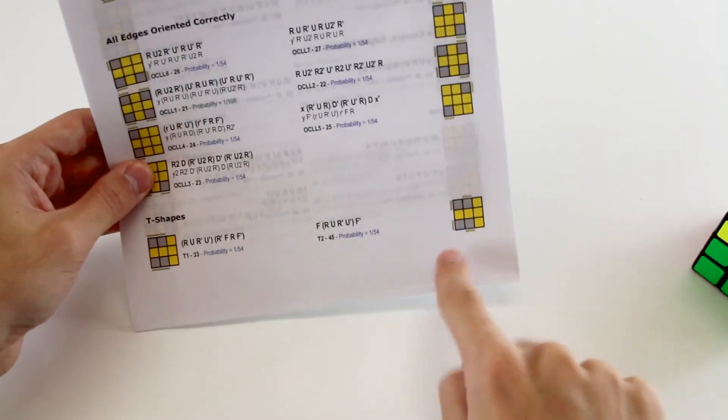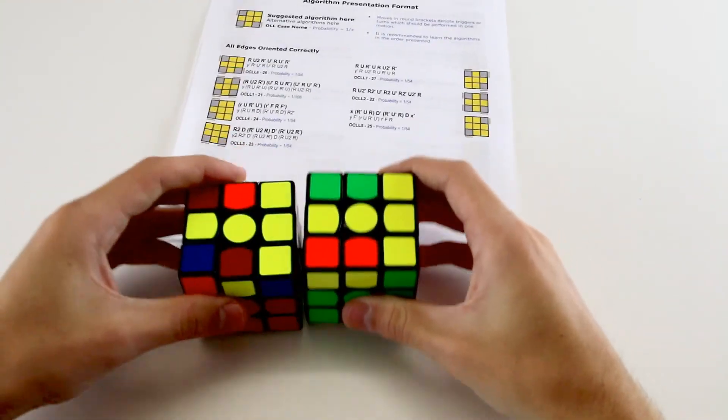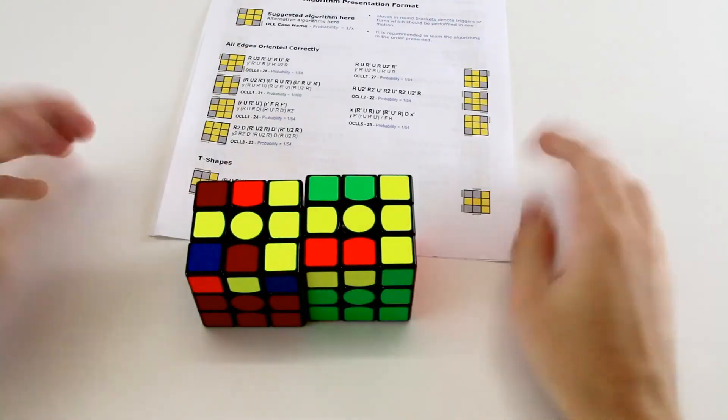The second group here are the T shapes, which are the two cases where you have a T on your top layer, and so on and so forth.